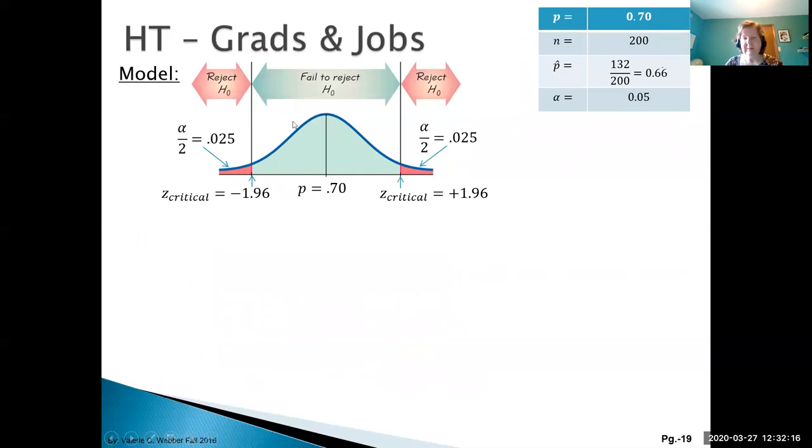Now that our model is completely set up, let's move on to our mechanics or calculation phase. Our Z calculated for proportions is: point of interest (sample proportion) minus center (population proportion) over spread (root PQ over N). Highlight this: the population proportion is the same value as in the spread because these come from our model. This value is coming from our sample.